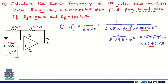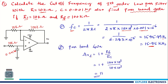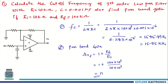They also asked us to find the passband gain. Using Avf = 1 + Rf/R1 and substituting Rf = 100 kΩ and R1 = 10 kΩ, the gain Avf = 11. This is how a direct problem is solved — given all parameters, write the circuit first, then use the fc and passband gain expressions.